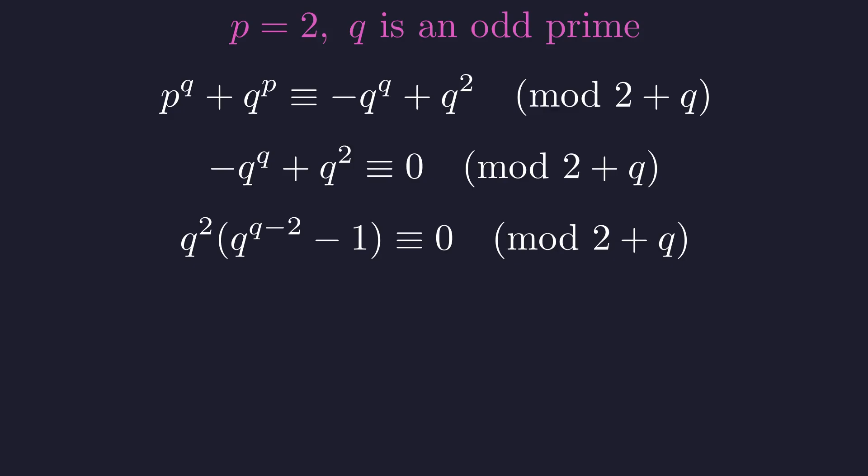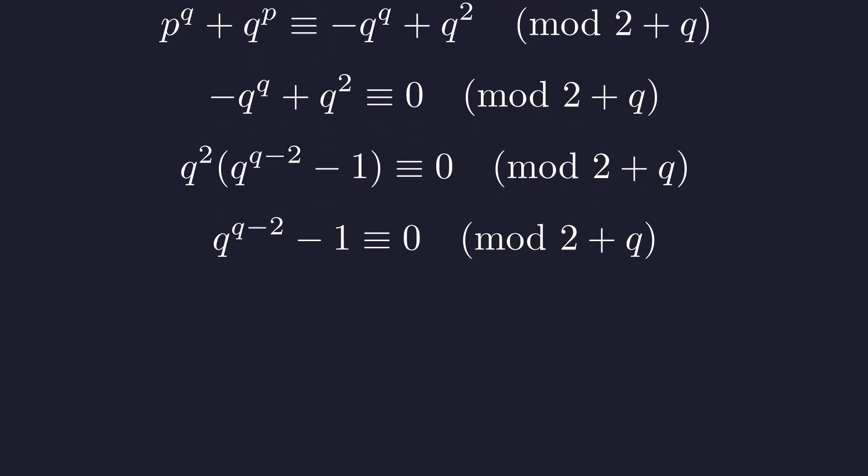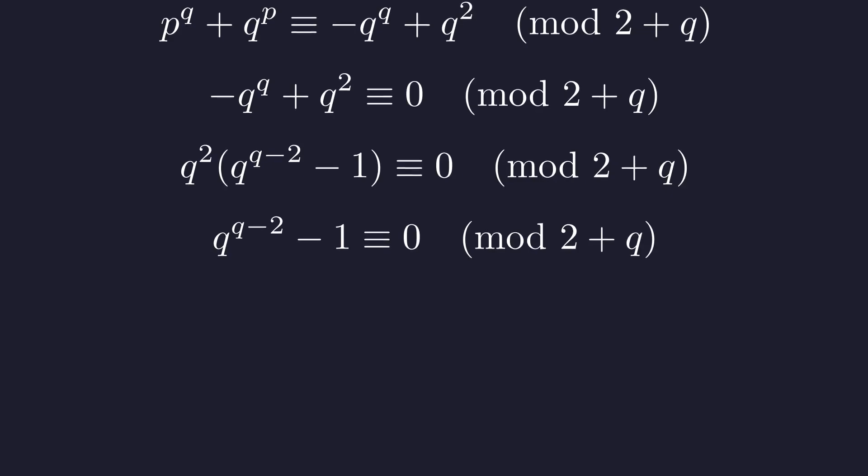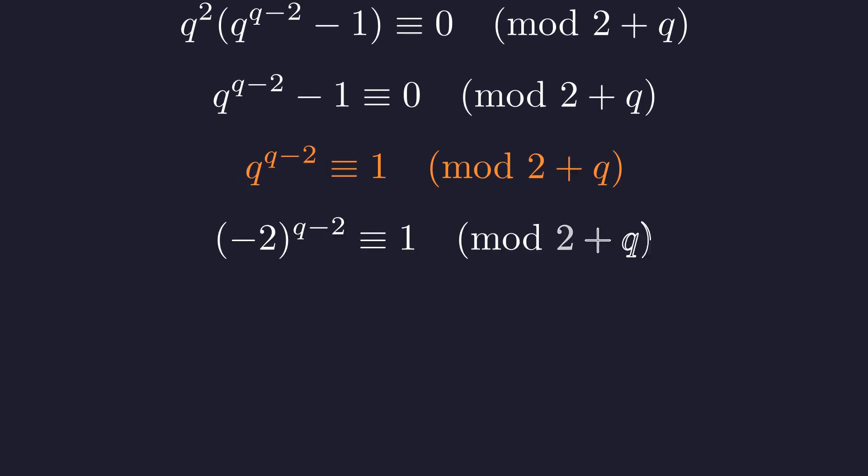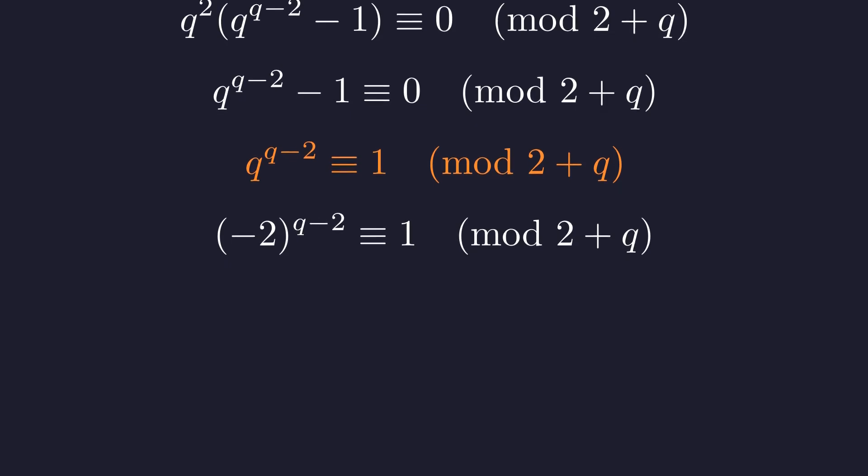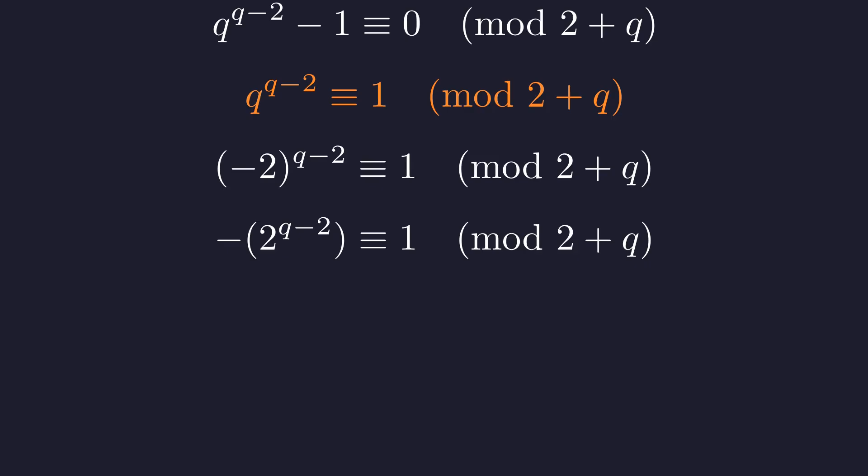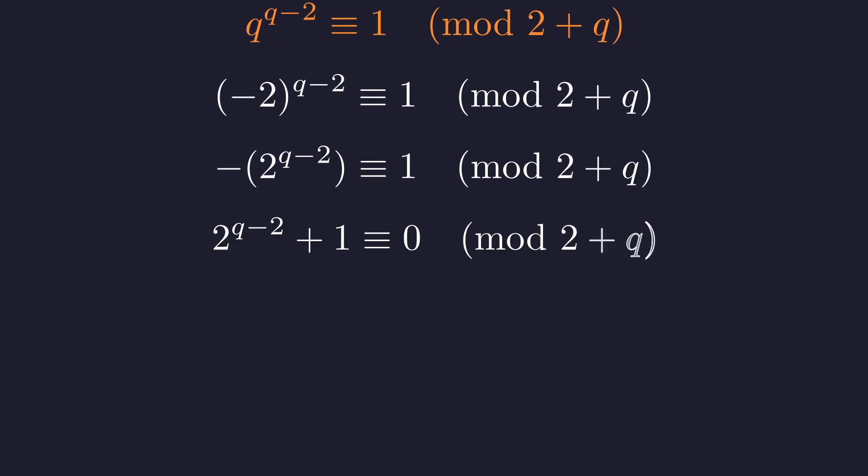Factoring out a negative q squared gives us this. I've multiplied by negative 1, which is fine in a congruence to 0. Therefore, the other factor must be congruent to 0 for the whole expression to be 0. In other words, q to the power of q minus 2 must be congruent to 1, modulo 2 plus q. Substituting q with negative 2 gives us this new congruence. Because the exponent is odd, the negative sign comes out. So, negative 2 to the power of q minus 2 must be congruent to 1.